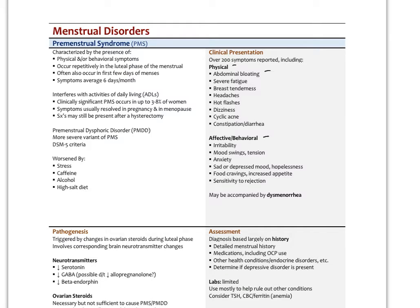Physical symptoms include abdominal bloating, severe fatigue, breast tenderness, headaches, hot flashes, dizziness, cyclic acne, and constipation or diarrhea. Affective symptoms involve irritability, mood swings, tension, anxiety, sad or depressed mood, hopelessness, food cravings, increased appetite, and sensitivity to rejection. All of these can be accompanied with dysmenorrhea — very painful menstrual periods.